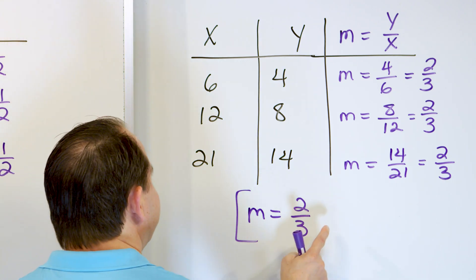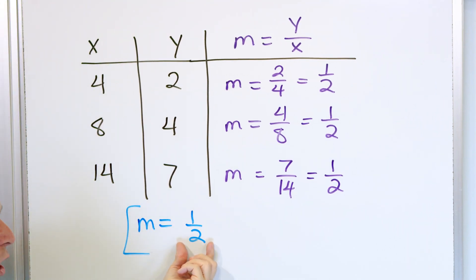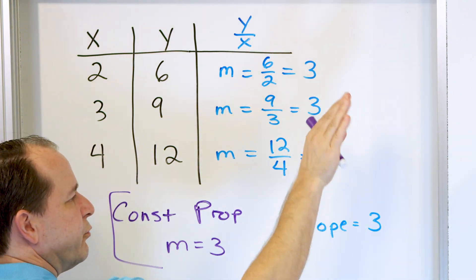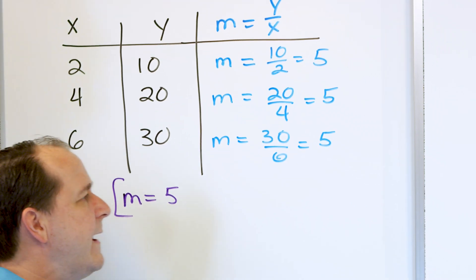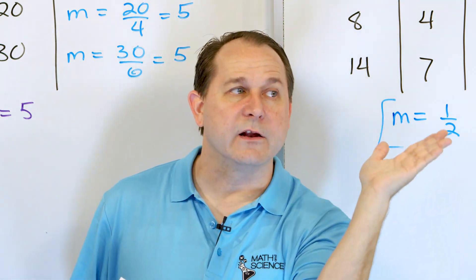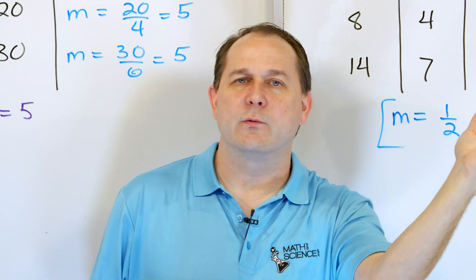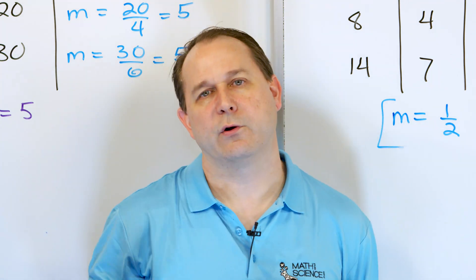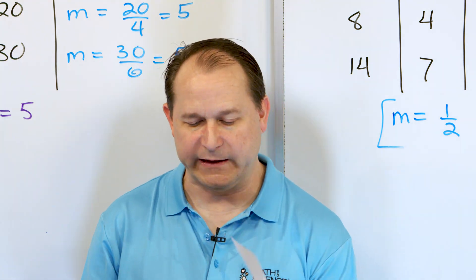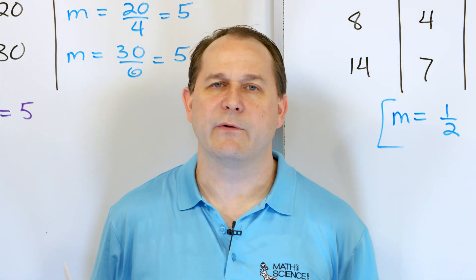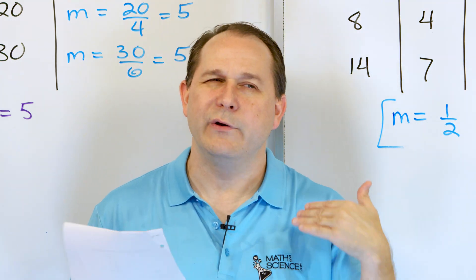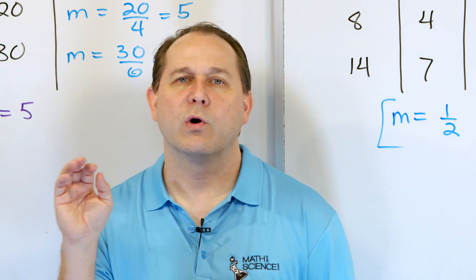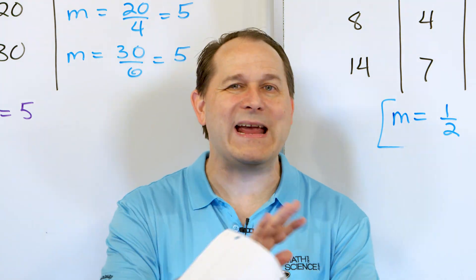Ranking the slopes from our problems: one-half is the smallest (flattest line), followed by two-thirds, then 3 (pretty steep), and finally 5 (the steepest). The steeper the line, the larger the slope. A slope of zero is totally flat; a slope approaching infinity is totally vertical. Practice calculating the constant of proportionality from coordinate pairs, and follow along to the next lesson, where we'll tackle the more general concept of slope for any line on a graph.